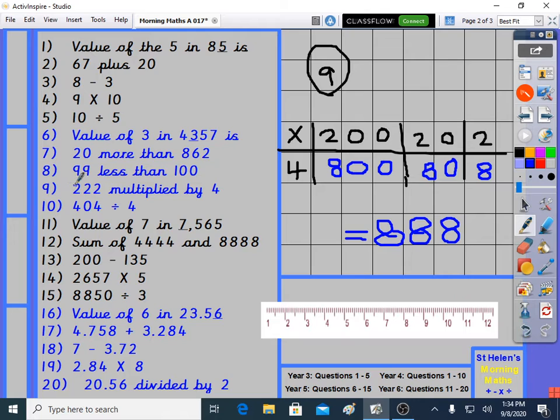Really, when you multiply by 4, multiply 2 by 4, it's 8. 2 by 4 is 8. 2 by 4 is 8. It's 8, 8, 8. Let's go on to question 10.